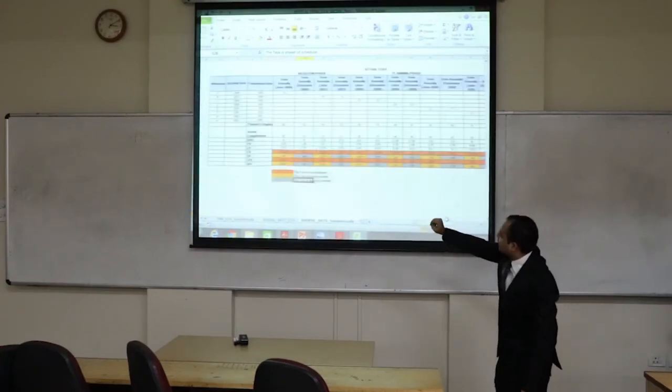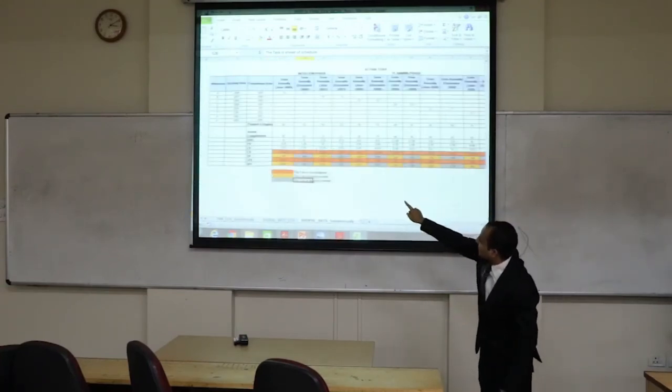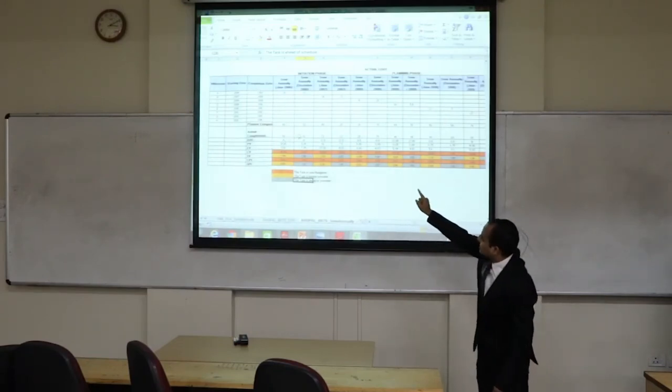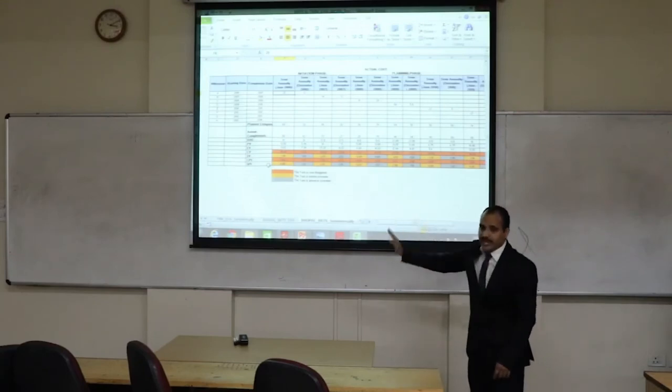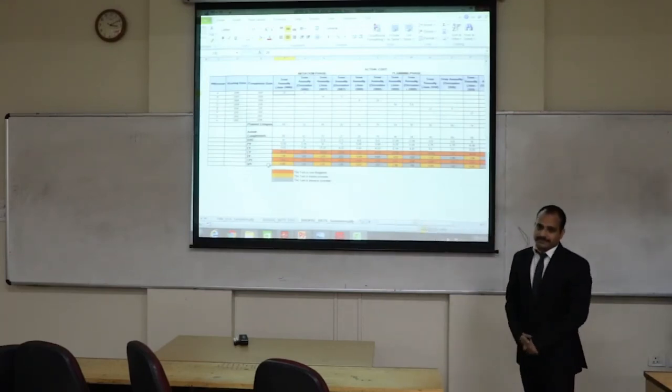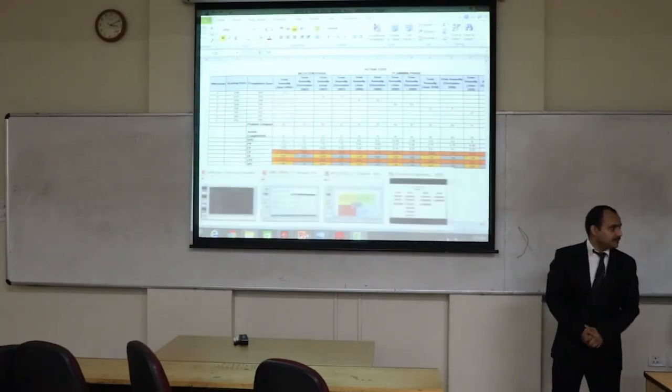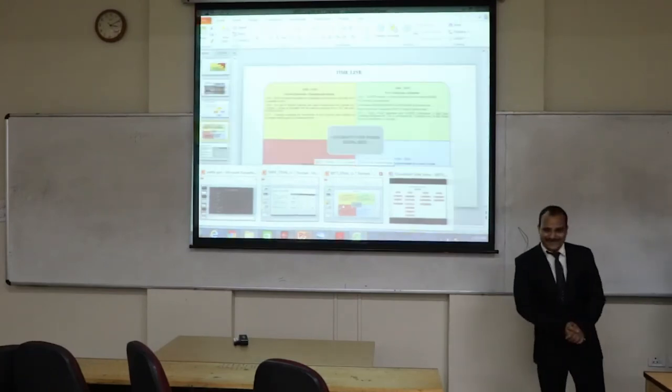For example, the activity A first phase is over budgeted, whereas same activity under schedule variance is coming negative. So it is also behind the schedule. I will just call Rahul for explaining BCP.